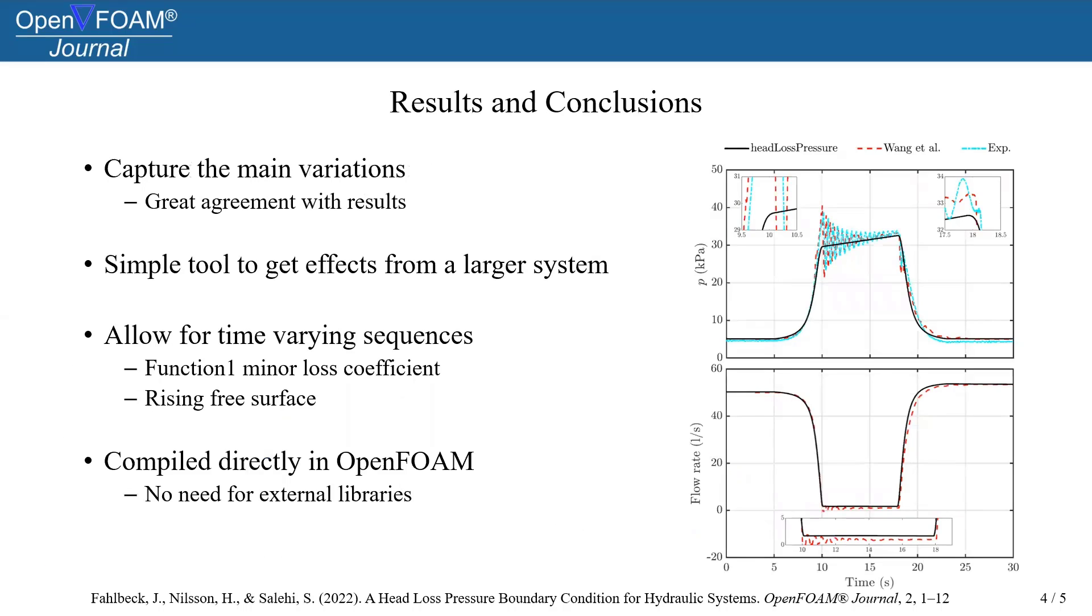So we can see that with this pressure boundary condition, if we look at the pressure and flow rate in these two graphs, it is possible to capture the main variation to a great extent with the current implementation.